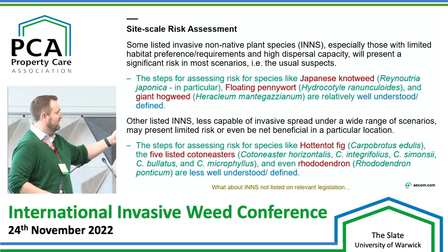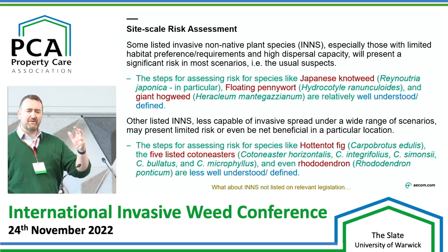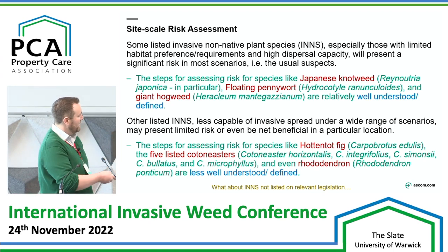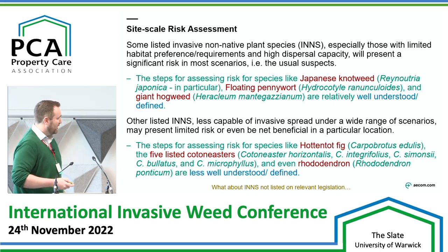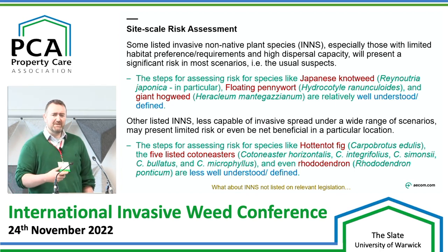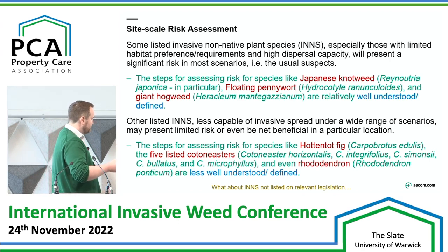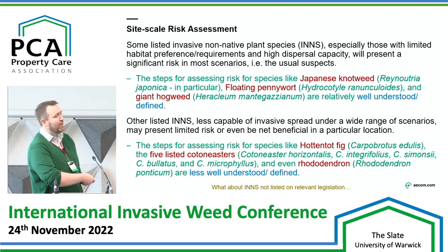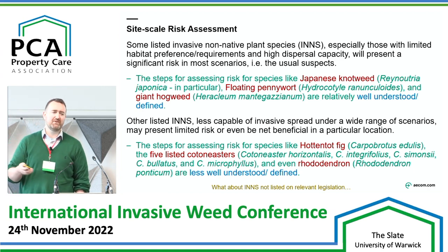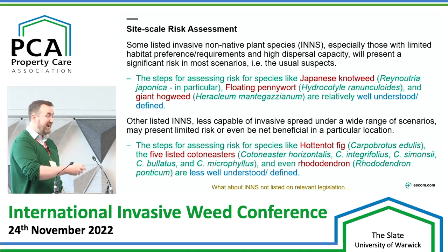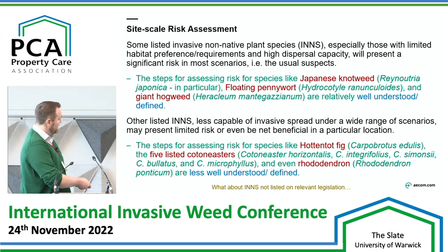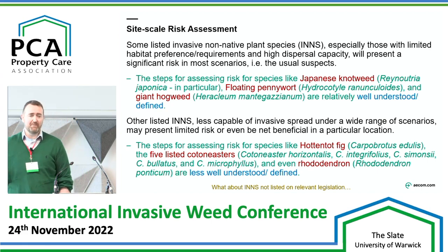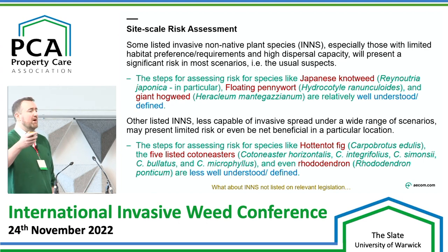Talking about cotoneaster, hottentot fig, and rhododendron — I'm not saying these species aren't problematic or high risk in certain scenarios — but unless it's coastal cliffs, a midland garden with a potted hottentot fig probably doesn't need the full treatment. When it comes to cotoneaster, limestone escarpments are the places where they cause the most issues, and rhododendrons in ancient woodlands and so forth. The process for deciding whether to implement control of these species in situations where they're not really doing harm and there's very little probability they would escape into the wild is less well defined, and that's something we should be talking about.